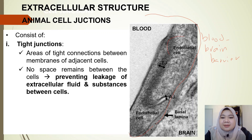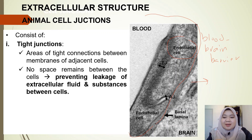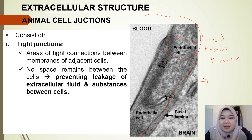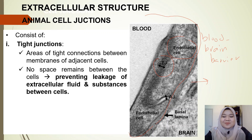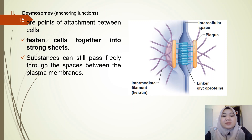In the blood-brain barrier, you can see the blood vessel lined by endothelial cells alongside brain tissue. The endothelial cells are held very tightly together due to the tight junctions between them. This prevents any unwanted materials from the blood from passing through the endothelial cells and entering the brain.